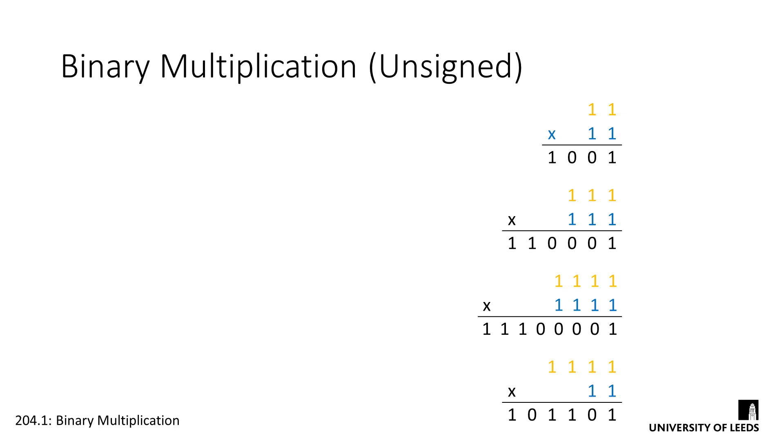So you should have come up with the answers displayed here. And from these we can derive a general rule for the maximum output width of a multiplication. For output x and multiplicand and multiplier widths n and m respectively, the max width of x is equal to n plus m.